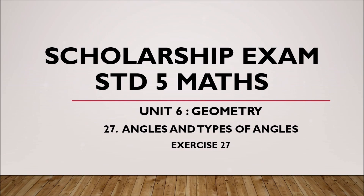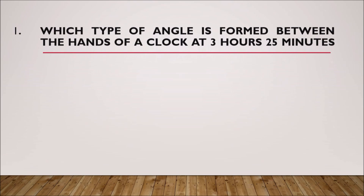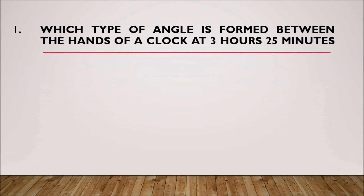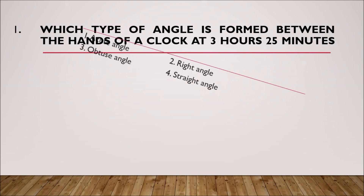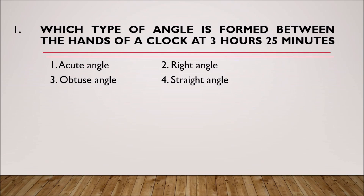Question 27. Let's begin with the first question: which type of angle is formed between the hands of the clock at 3 hours 25 minutes? Options are: acute angle, right angle, obtuse angle, straight angle.